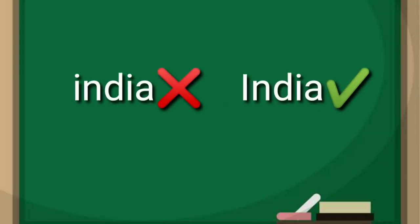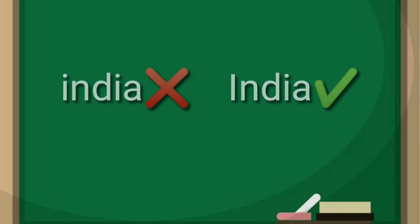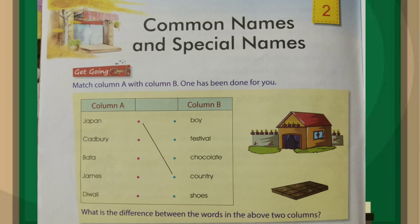Remember one thing, children — special names always begin with a capital letter. It always starts with a capital letter. Now, open the second chapter: Common Names and Special Names. We will see from the book.